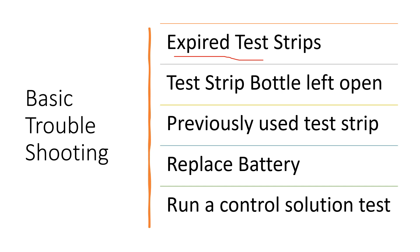Previously used test strips can obviously cause an error, so ensure you're using a fresh test strip. Replacing the battery can sometimes resolve issues with errors on glucose meters, so if you're continuing to get error after error, it may be time to replace the battery. You can also use control solution to run a test to ensure the meter is functioning properly. I will also put links to the specific error codes in the video description.